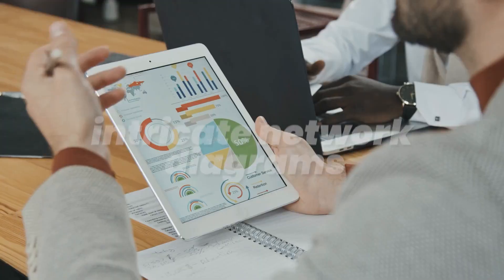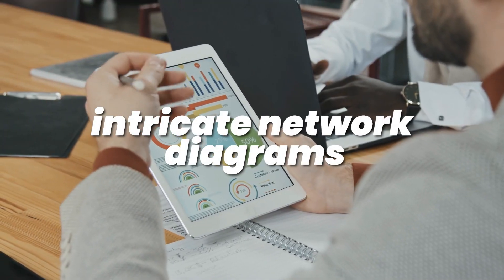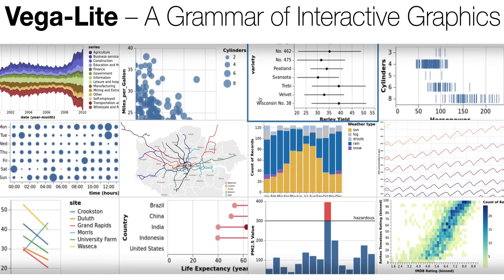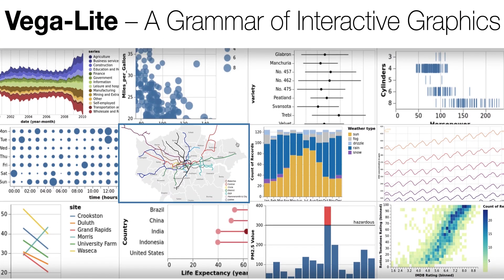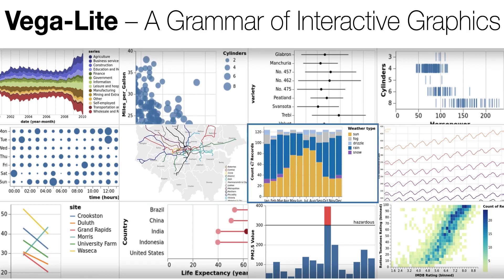Congratulations, you've learned the basics of Vega-Lite grammar of graphics. With Vega-Lite, you can create a wide range of visualizations by combining and layering these different components. In the future, we'll also discuss the grammar used in Vega-Lite for user interactions, which has its own set of parameters. Until then, keep honing your data visualization skills and happy coding.